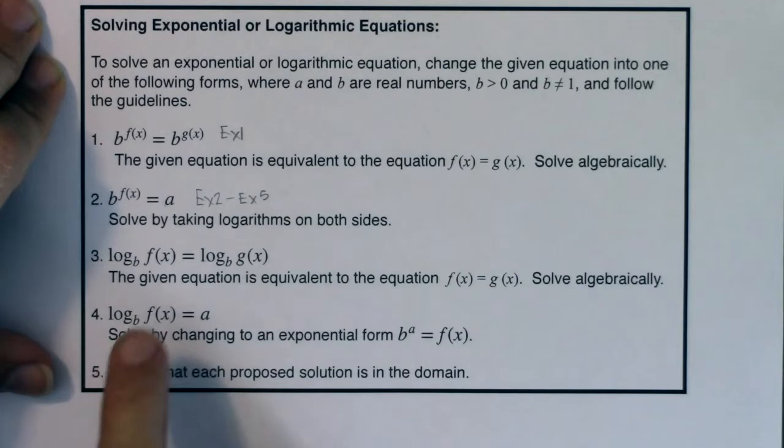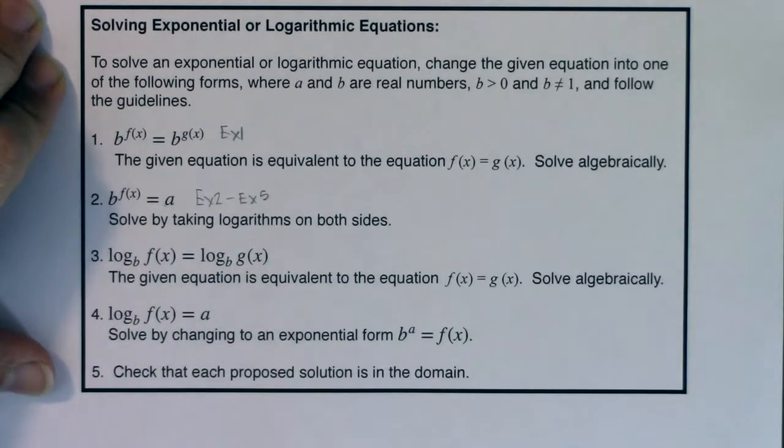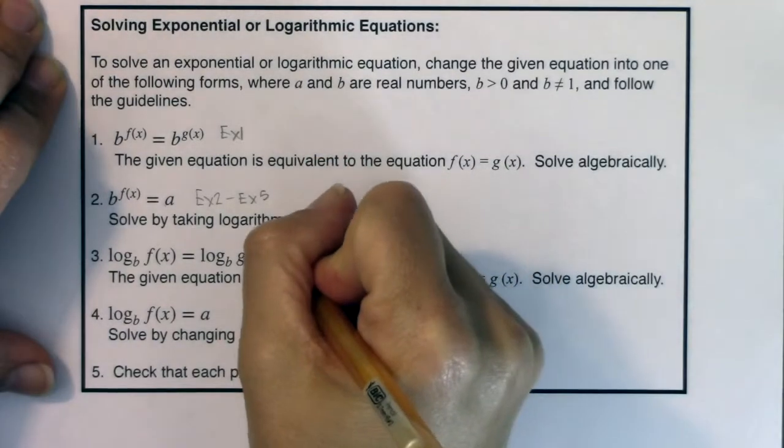Alright, there were times when we had a logarithmic equation with logs on both sides, and we ultimately needed to set the arguments equal to each other. And we saw that in example 7, and just now in example 9.